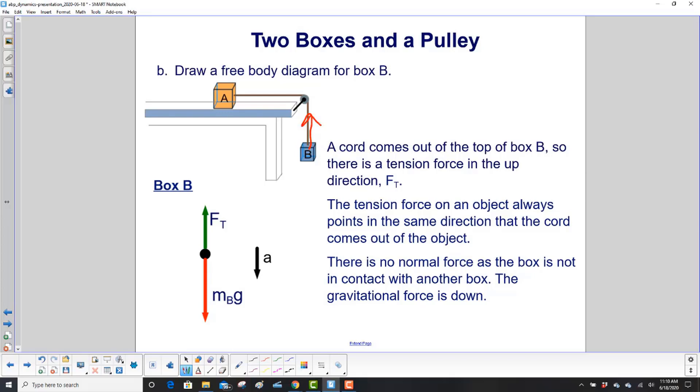The tension force on an object always points in the same direction that the cord comes out of the object. There's no normal force here. This box is not in contact with another box. The only other force we have is the gravitational force.